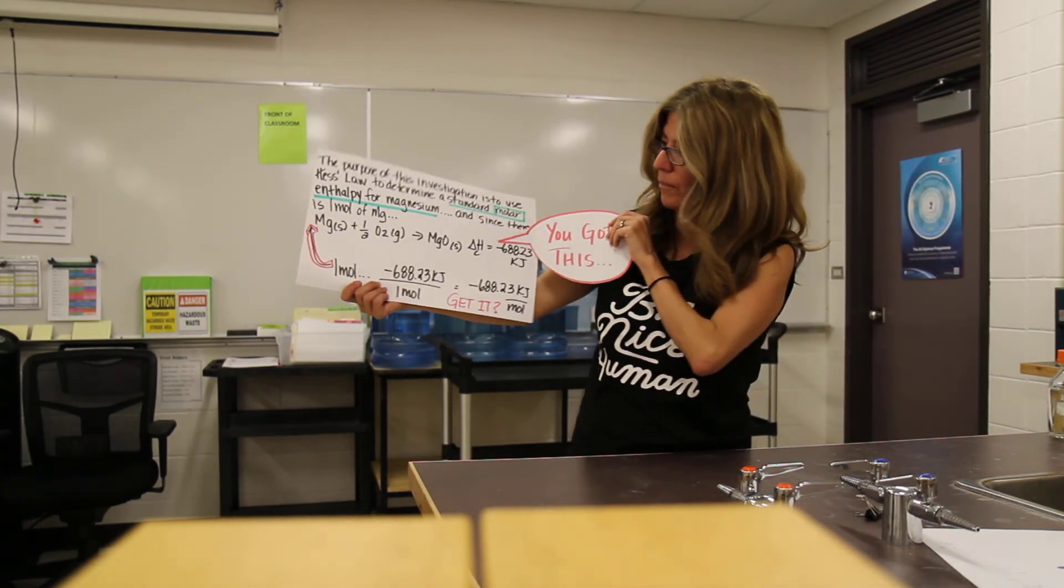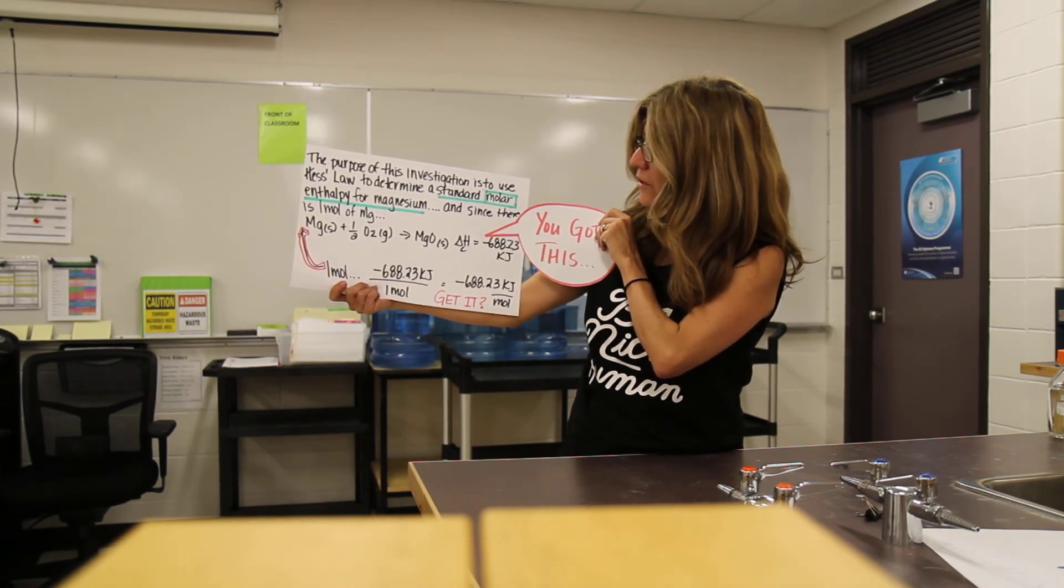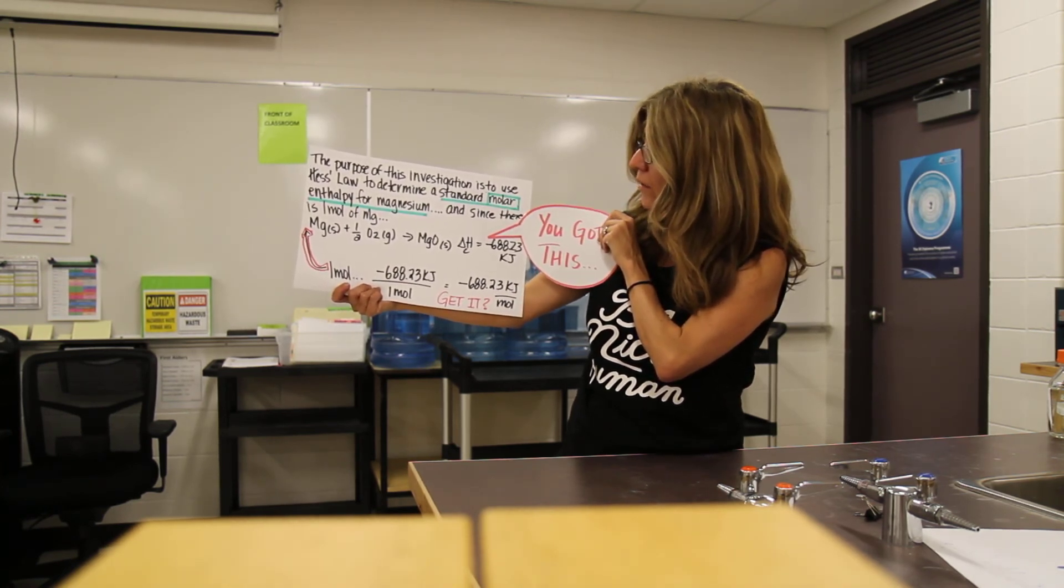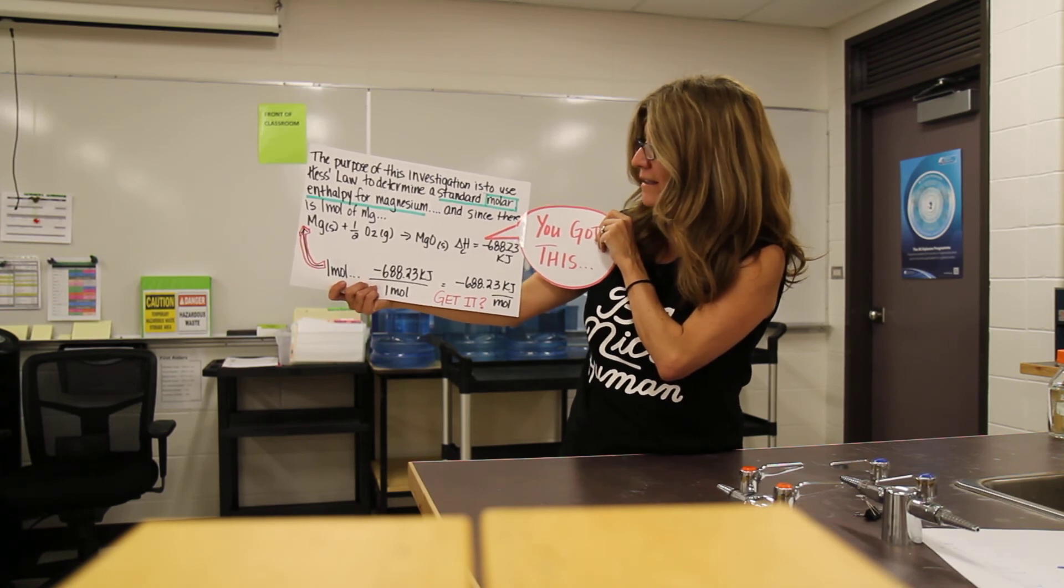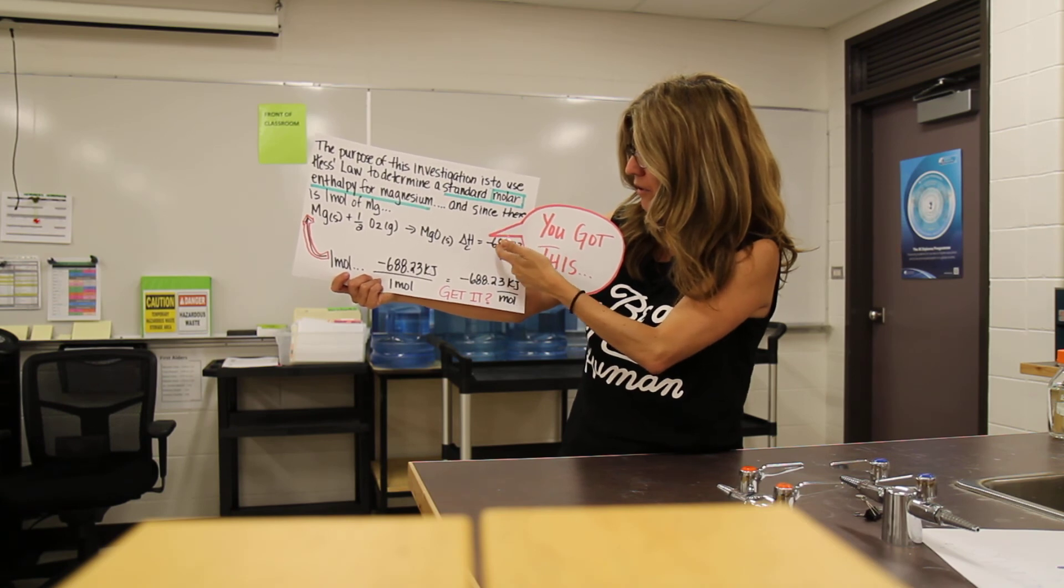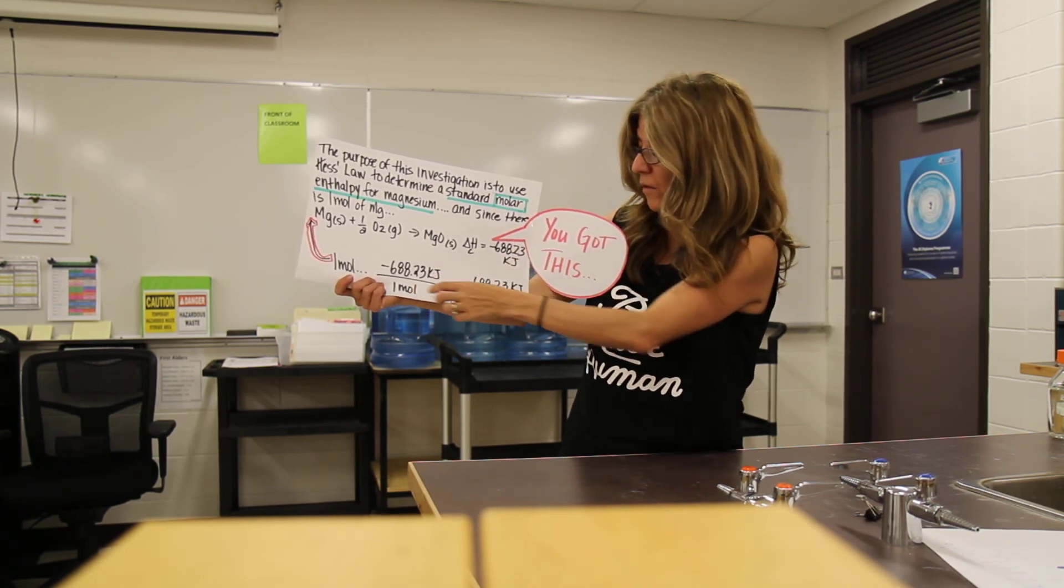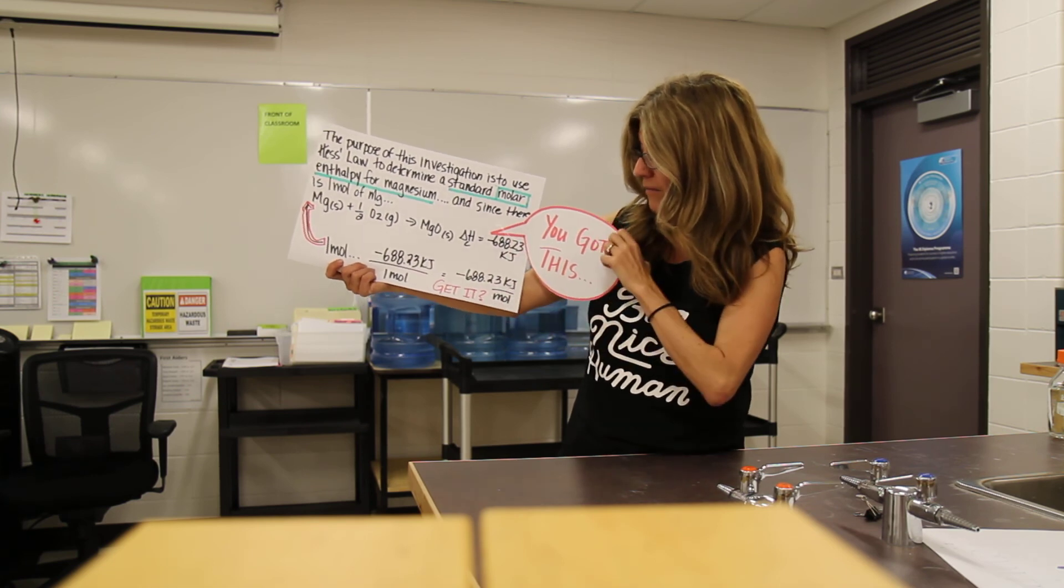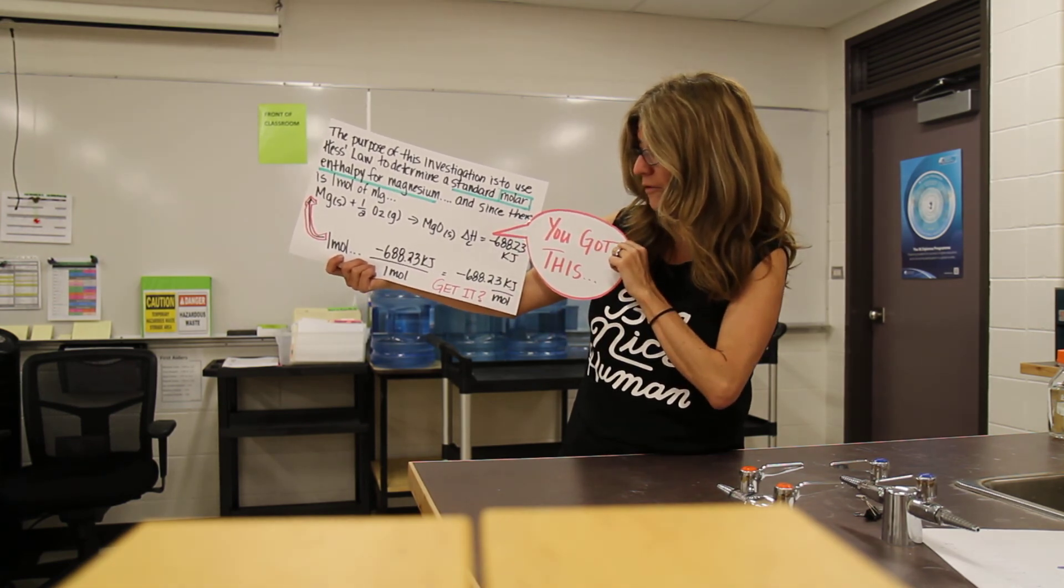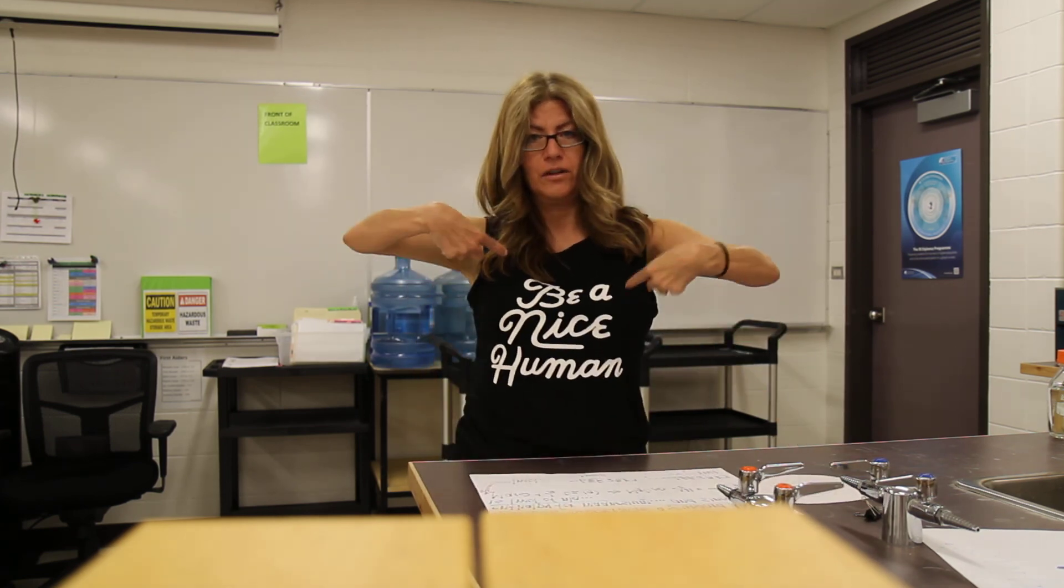So, at the end, let's go back to our problem. Our problem was, the purpose of this investigation is to use Hess's law to determine the standard molar enthalpy of magnesium. And since there's only one mole of magnesium in this balanced equation, I take my negative 688.23 kilojoules, divide that by one mole, kiddos, and I get my answer of negative 688.23 kilojoules per mole. Get it? You got this. I'm proud of you. You got this. Okay, be a good human. Be kind. Okay, peace.